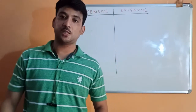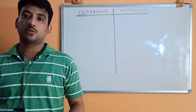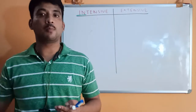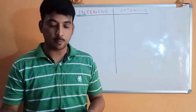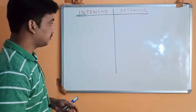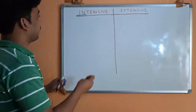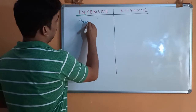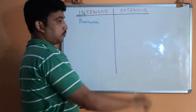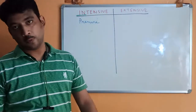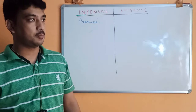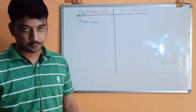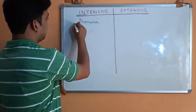What are the examples of intensive and extensive properties? Try to remember which properties are independent of mass. The first one is pressure. The mass of a body will not make any effect on the pressure. Pressure is force per unit area. So pressure is an intensive property.